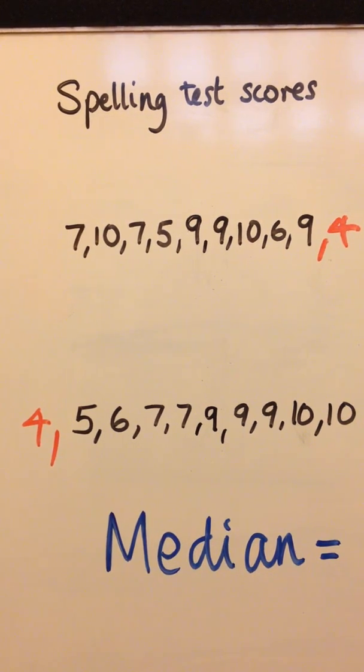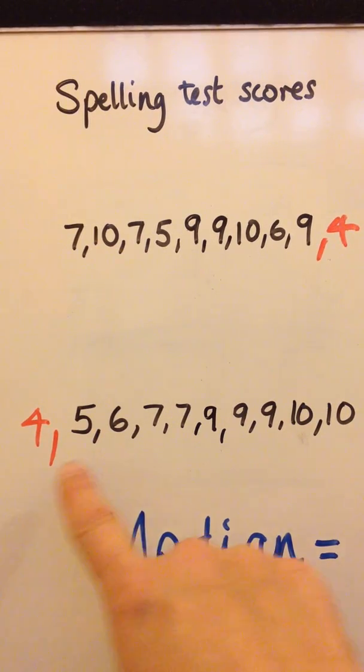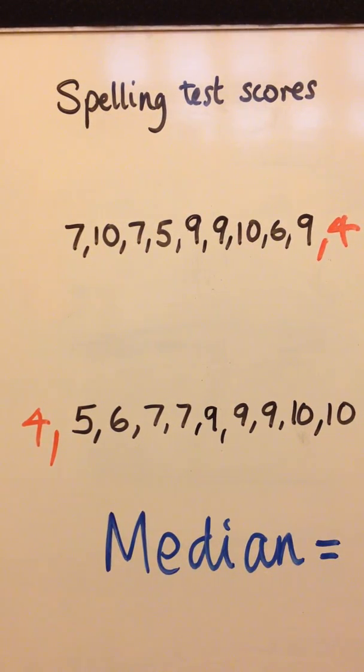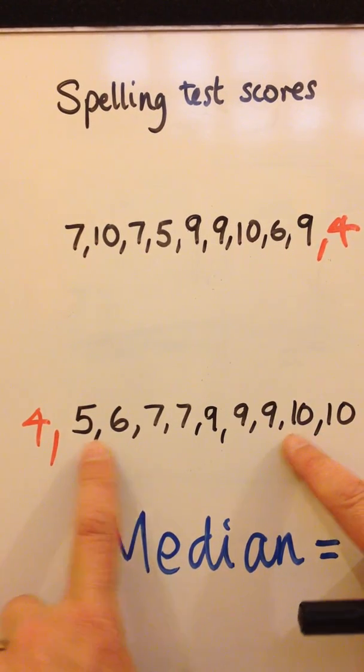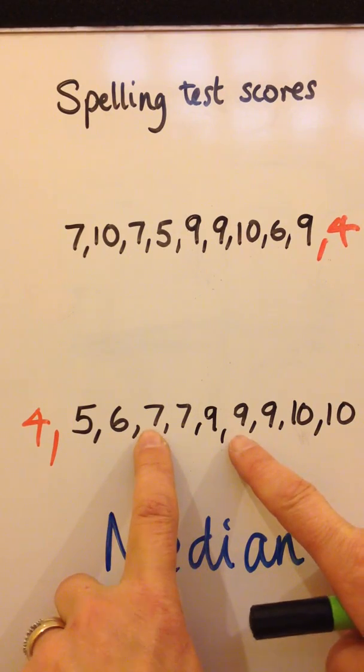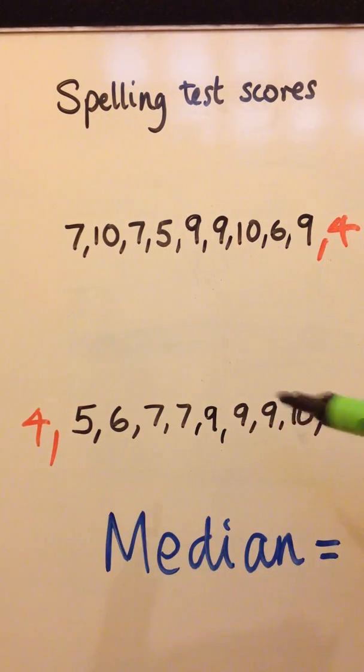When I put the data in order, the 4 goes on the beginning, we've got 10 values. To find the median, start jumping from either end until you get to the middle. So jump, jump, jump, but in the middle we have two values, 7 and 9.